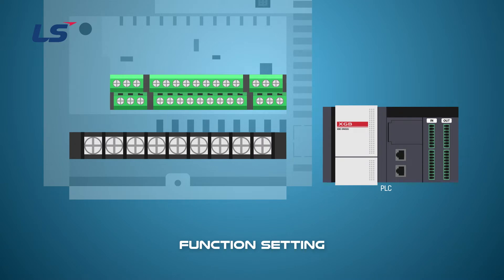The wiring requires an operation signal, multi-step speed command, and brake control signal, and is connected to the PLC output terminal. The parameters of each terminal of the inverter are based on the factory default values.